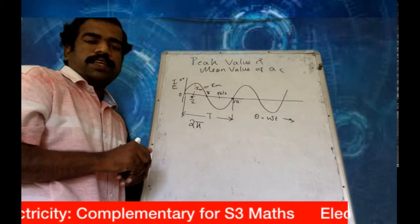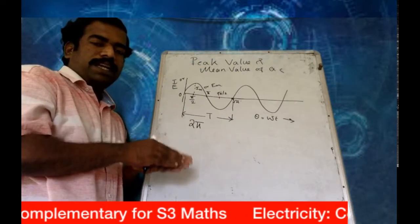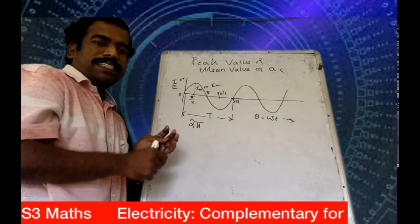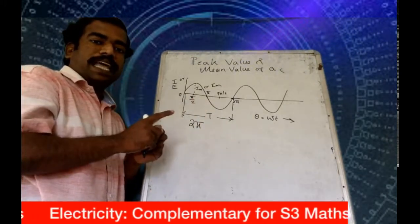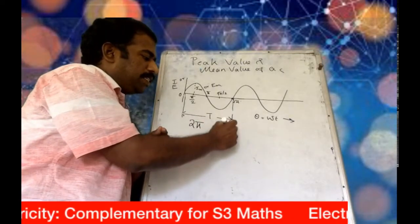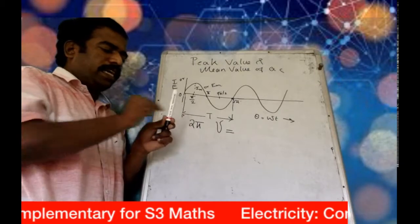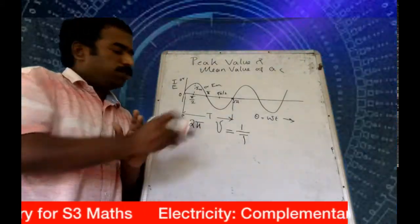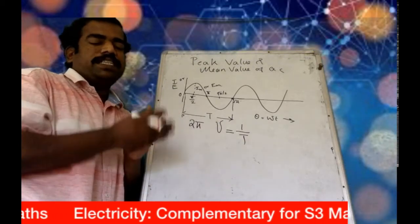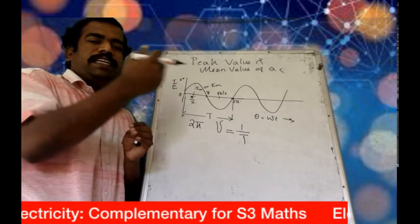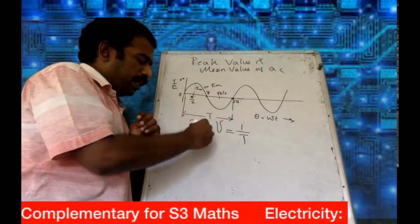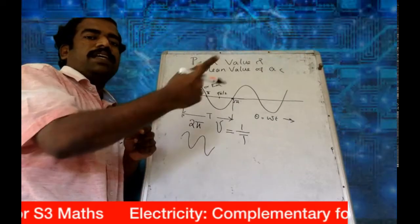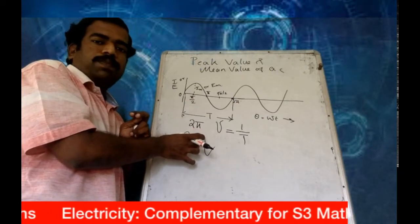Another thing is frequency. Frequency is nothing but the number of cycles. This is the period of one cycle. The number of cycles passing through a point in one second is called frequency, and it is denoted ν equal to 1 by T. This is the frequency of the AC wave. The frequency and period are inversely proportional — if the frequency increases, the period decreases.